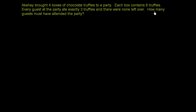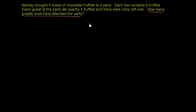So we're trying to figure out how many guests must have attended the party. Let's define a letter to represent that — let's say G for guests. G is equal to the number of guests at the party.